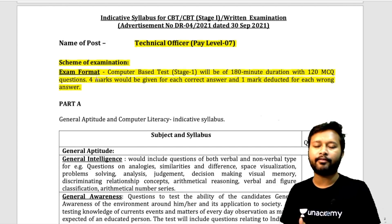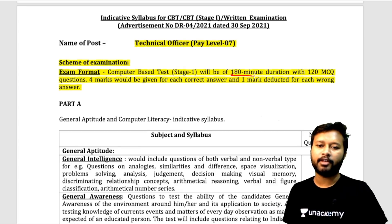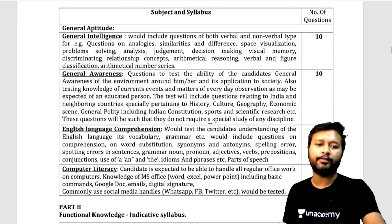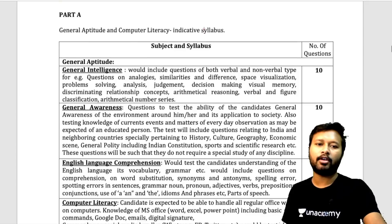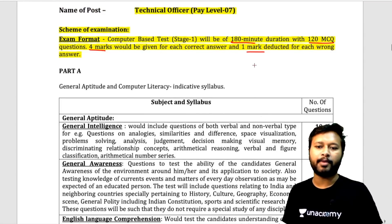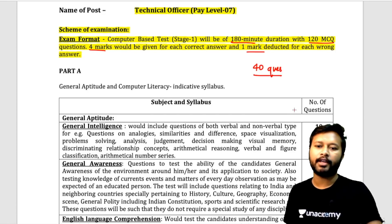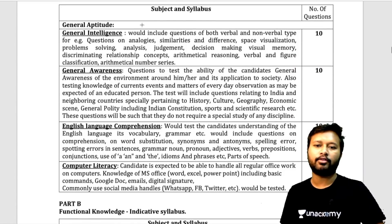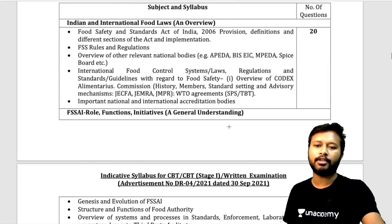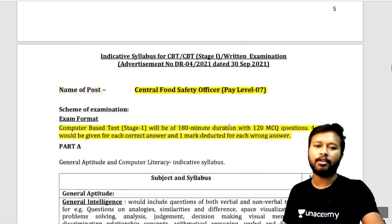The syllabus and exam format is the same for both positions. You are given 180 minutes, 120 questions, four marks for each correct answer, and one negative mark for each wrong answer. The question paper of 120 MCQs is divided into two parts. Part A consists of 40 questions: 10 on general intelligence, 10 on general awareness, 10 on English language, and 10 on computer literacy. The rest of the questions are in Part B.